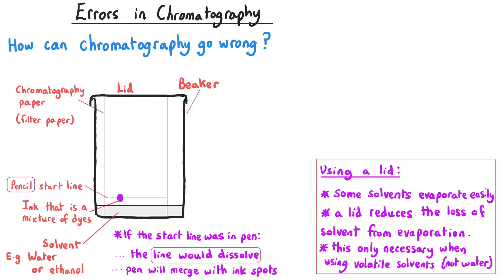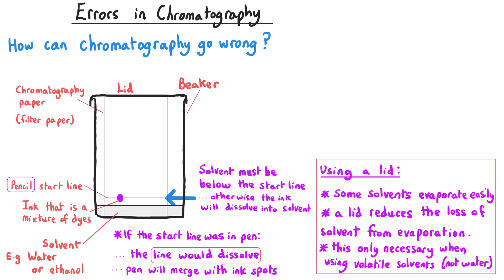It's really important to make sure that the level of the solvent touches the paper but doesn't go above our starting pencil line. If it does, the spot will dissolve in the solvent — the water will take up the colour of those dyes, so the solvent might become purple in the case of a purple dye, meaning the dye might not rise up the paper at all and instead go downwards into the solvent.